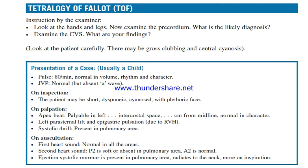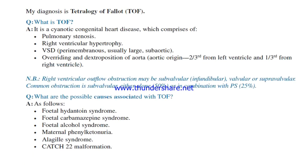Left parasternal lift and epigastric pulsation are present due to right ventricular hypertrophy. A systolic thrill is present in the pulmonary area. On auscultation, the first heart sound is normal in all areas. The second heart sound: P2 is soft or absent in the pulmonary area; A2 is normal. An ejection systolic murmur is present in the pulmonary area, radiates to the neck, and is more prominent on inspiration. So my diagnosis is tetralogy of Fallot.